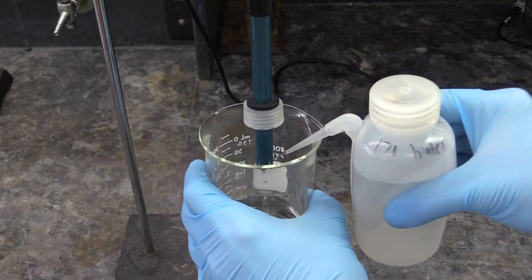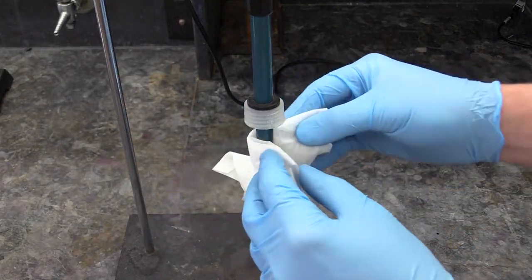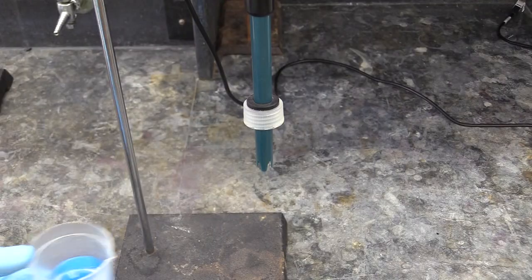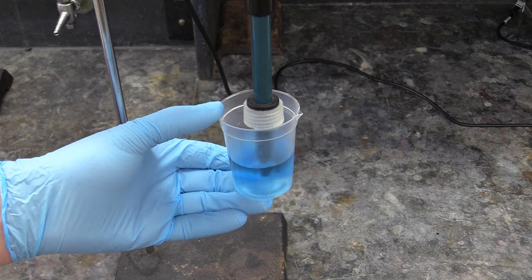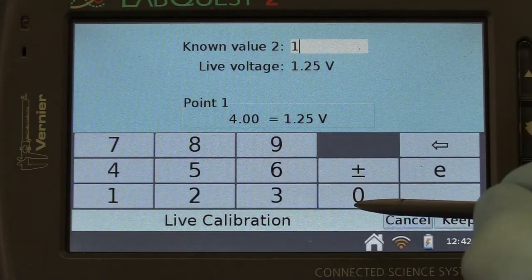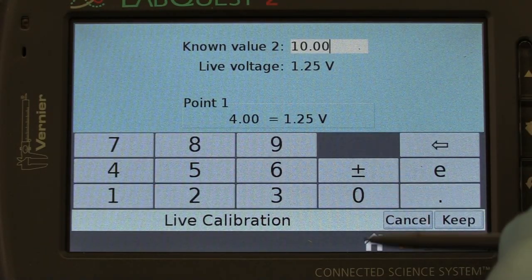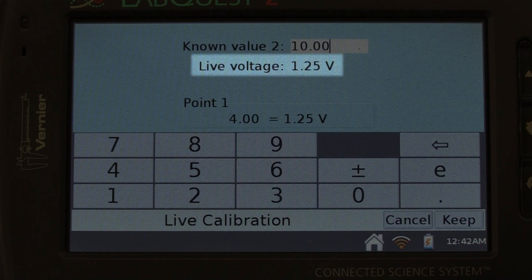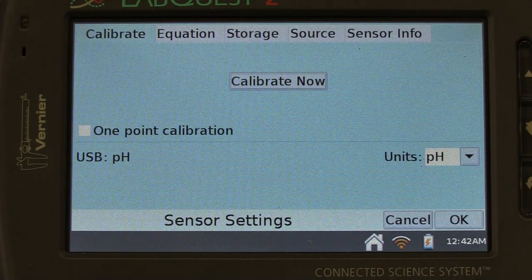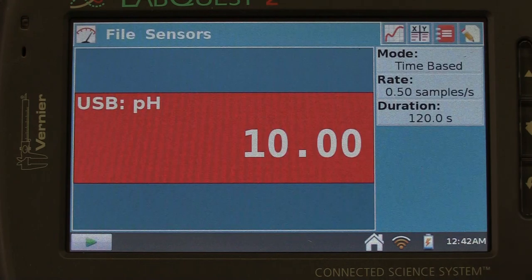Next, rinse the probe off again with more DI water and immerse it in the blue pH 10 buffer. Then enter 10 in the value 2 box, wait for the voltage reading to stabilize, and again press Keep. After that, press OK to return to the main screen.